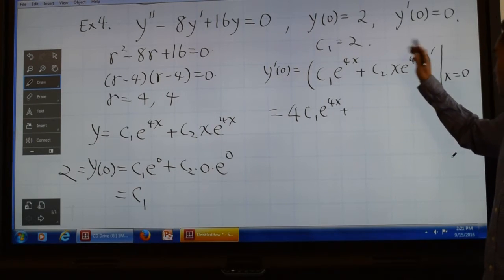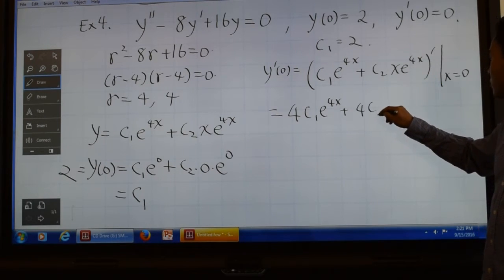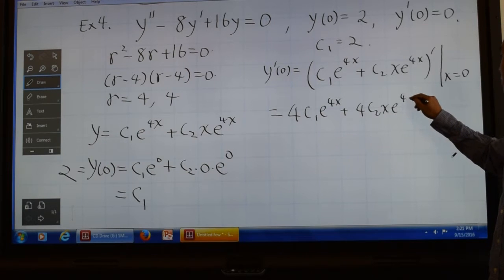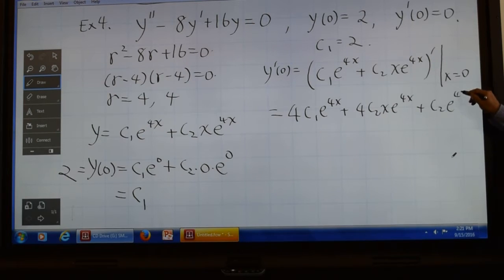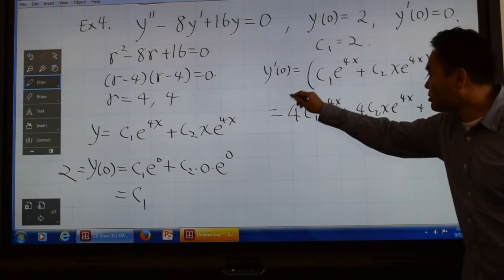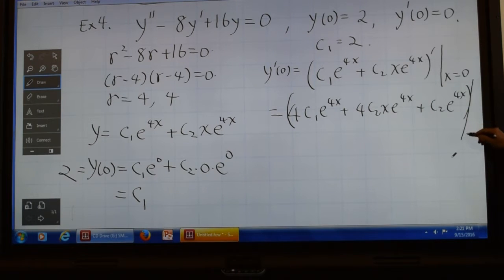So when you differentiate the second one first, then you get 4c2x e to the 4x, but then when you differentiate x, the first function, you get c2 e to the 4x. And only after that, you have to plug in x equal to 0.